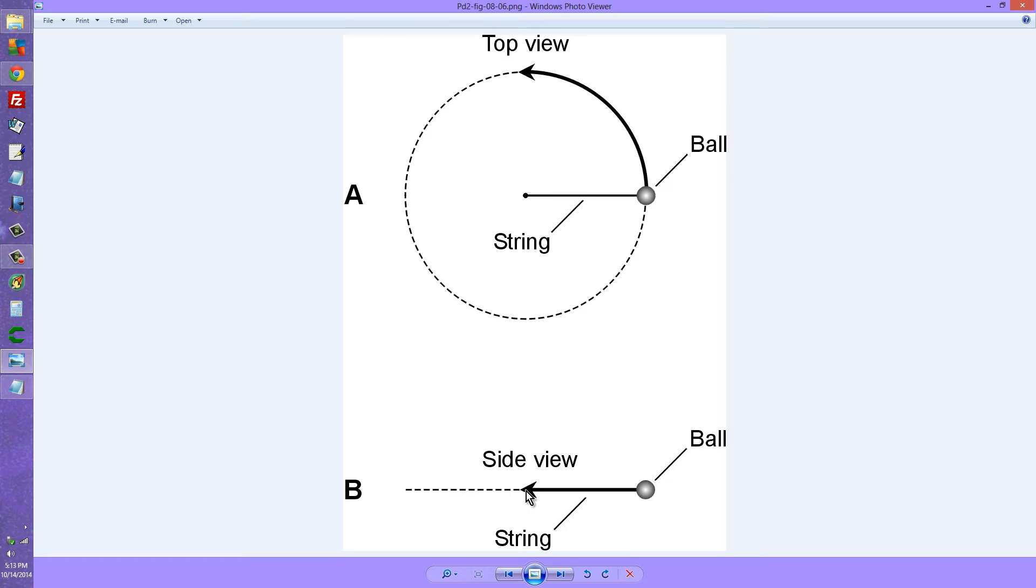Now imagine looking at the situation from the side. Suppose that this is a glowing ball and you turn off all the lights. Then what you see is a ball oscillating back and forth, back and forth. Actually it's moving around in a circle like this, but because of your perspective you see it oscillating back and forth. The motion seems to be fastest near the center here and slowest when it turns around at the extremes here as shown.